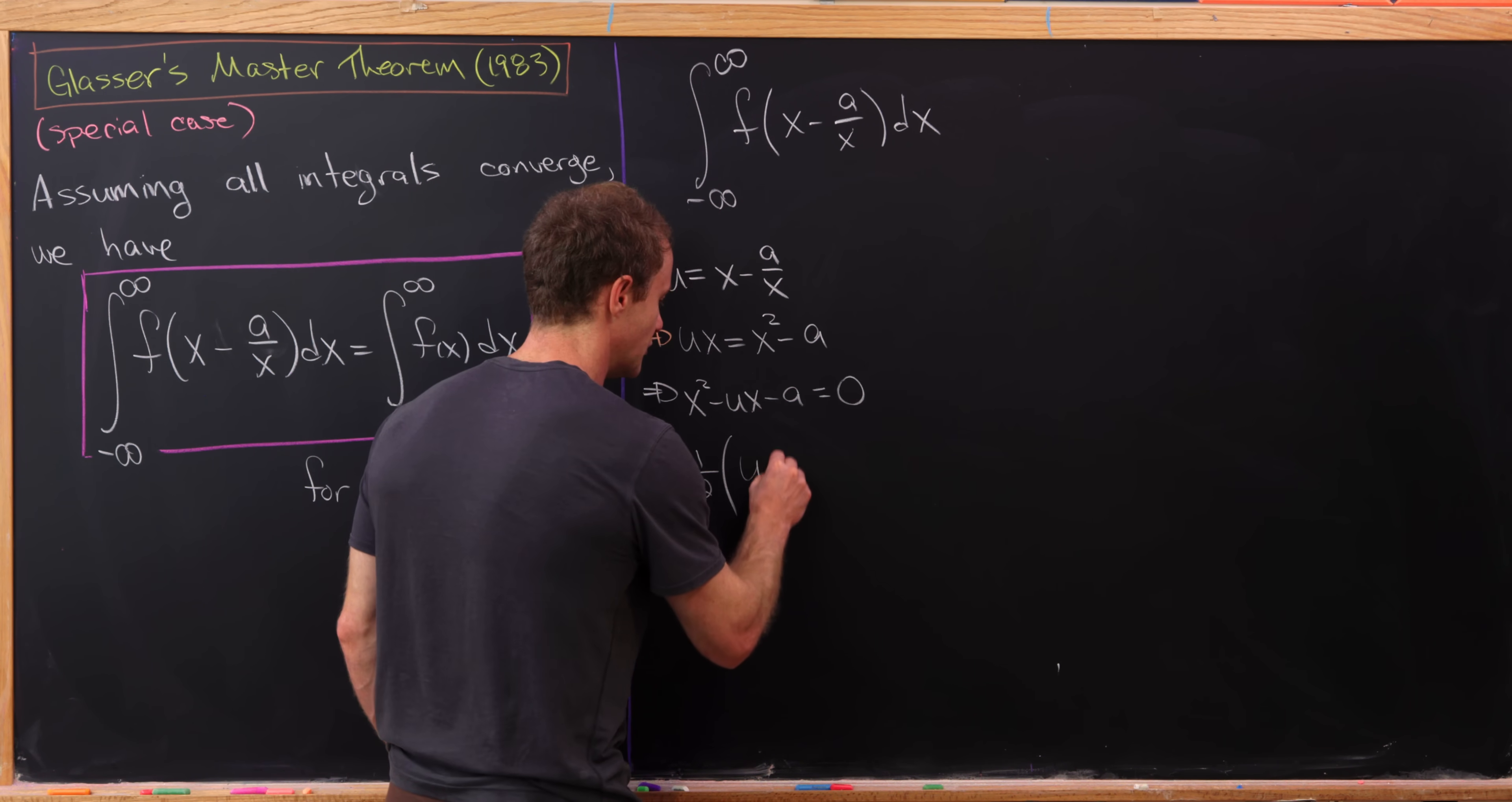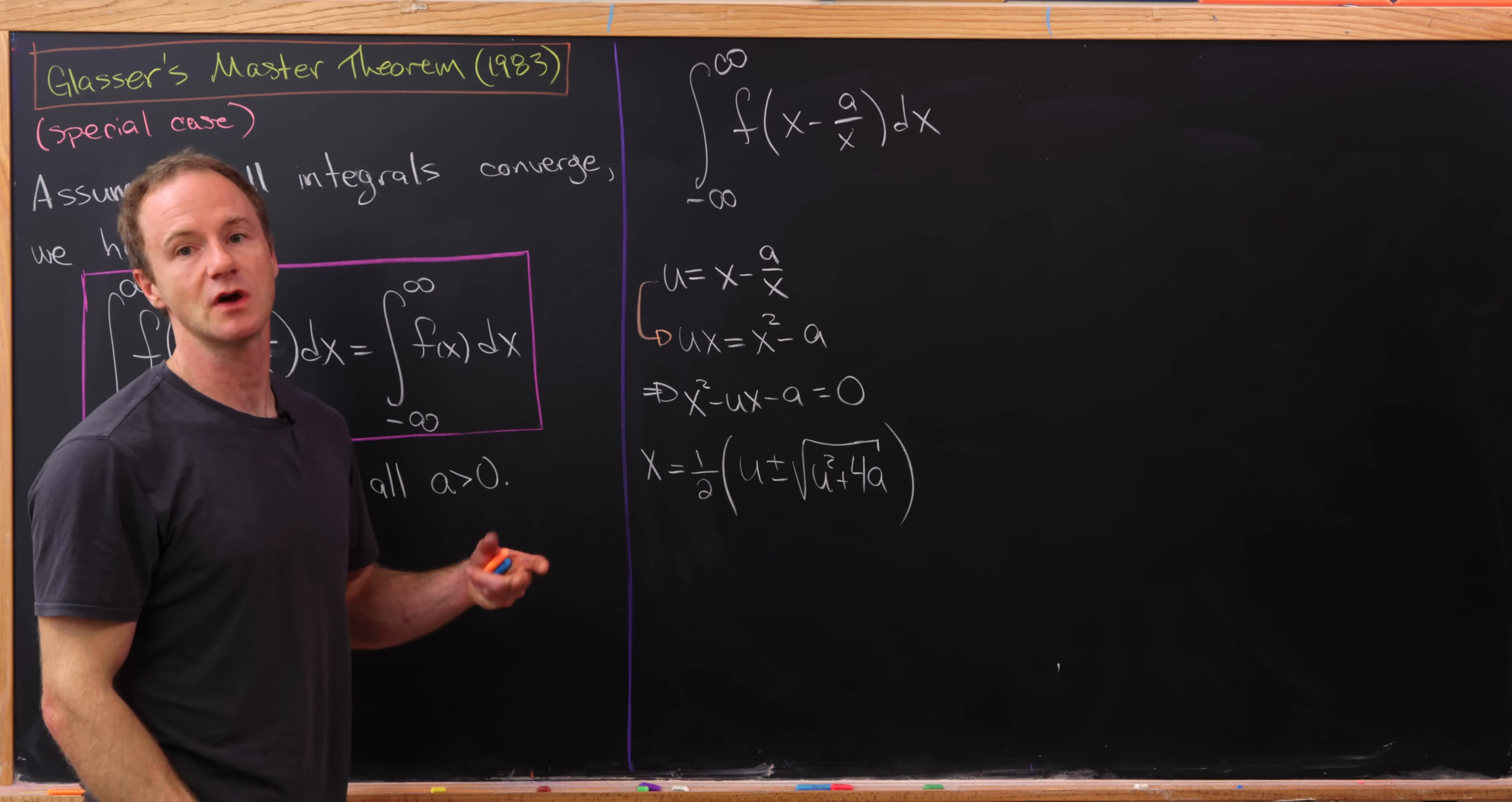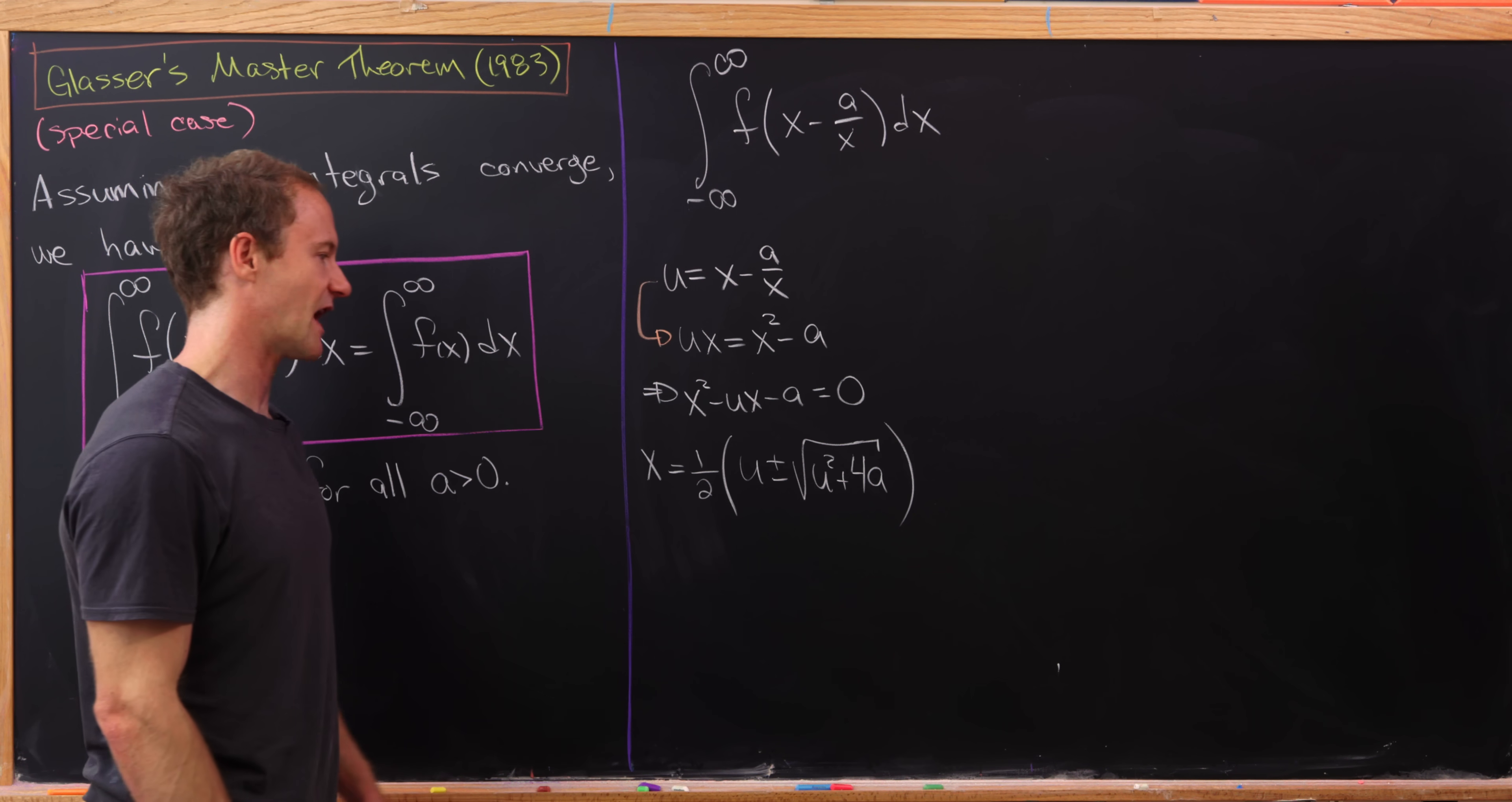Then we'll have u plus minus the square root of u squared plus four times a. I think you can maybe see why a has to be positive, or at least one reason why a has to be positive. That's because we want to get a non-negative number inside of that radical.